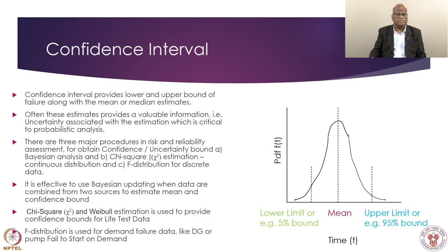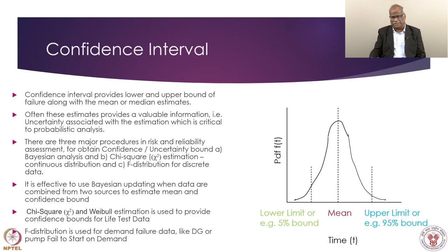There are situations — such as diameter variation in quality control — where we control quality on both sides, requiring both lower and upper bounds. There are three major procedures in risk and reliability analysis for obtaining confidence bounds: first, Bayesian analysis; second, the chi-square distribution method for continuous distributions; and third, the F-distribution for discrete data. We will take a practical Bayesian example when we have a lecture on PRA or system modeling.